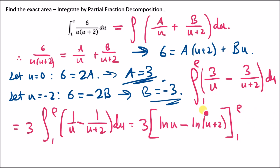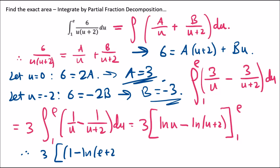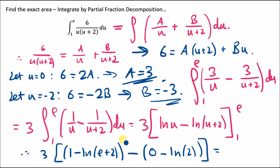Plugging in the limits: at u = e, ln e = 1 and ln(e+2) gives 1 minus ln(e+2). At u = 1, ln 1 = 0 and ln(1+2) = ln 2, giving 0 minus ln 2. Subtracting: [1 minus ln(e+2)] minus [minus ln 2] = 1 minus ln(e+2) plus ln 2. Simplifying using log laws, the exact area is 3 times [1 + ln(2 over (e+2))].